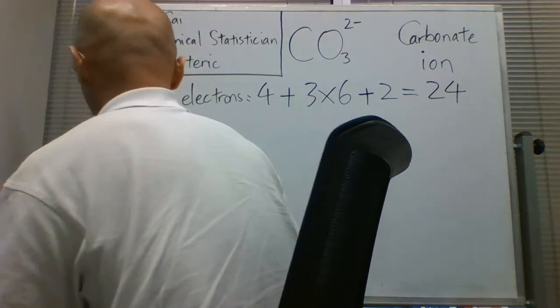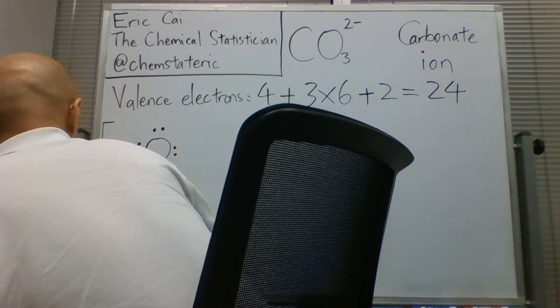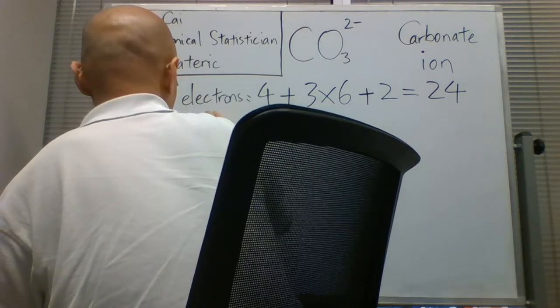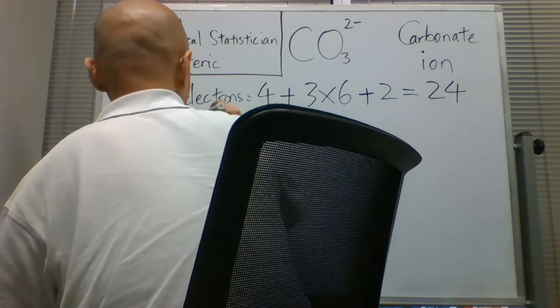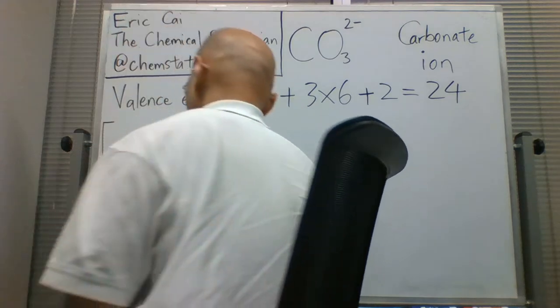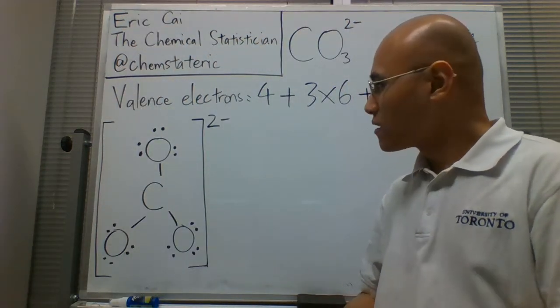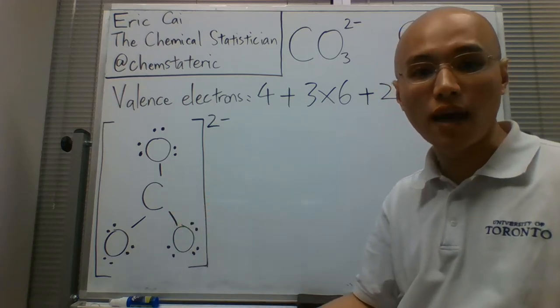Now, there's a charge of two minus, so let's draw square brackets around this Lewis structure. And let's write two minus here. Now, the electrons are distributed, but the carbon in the middle does not have a stable octet.